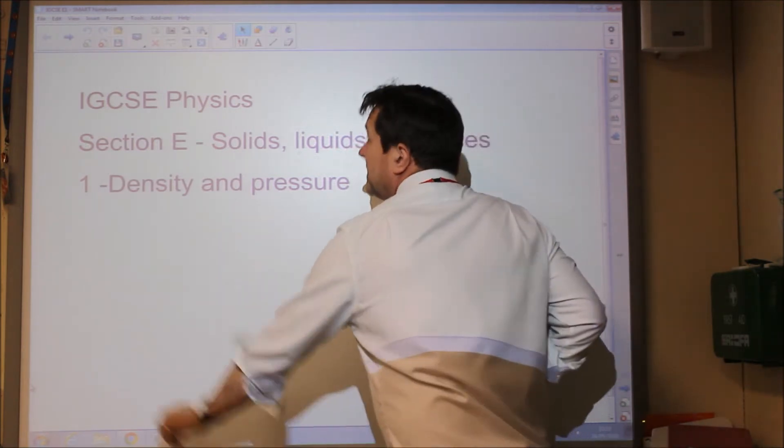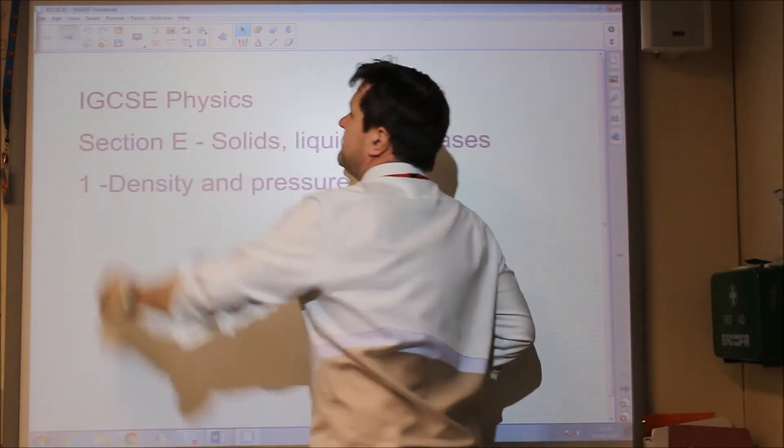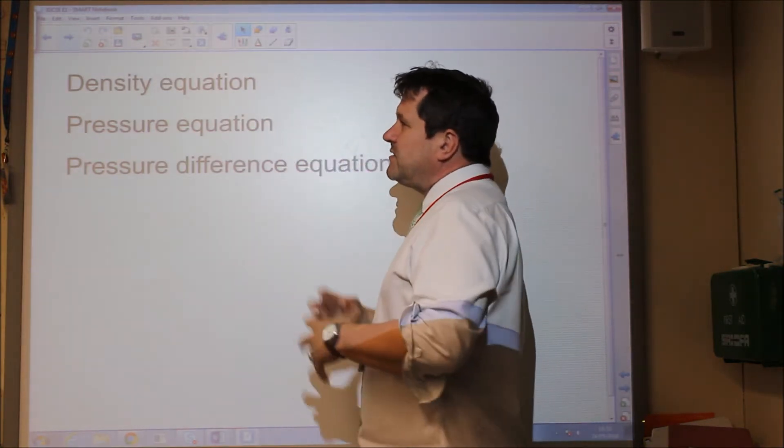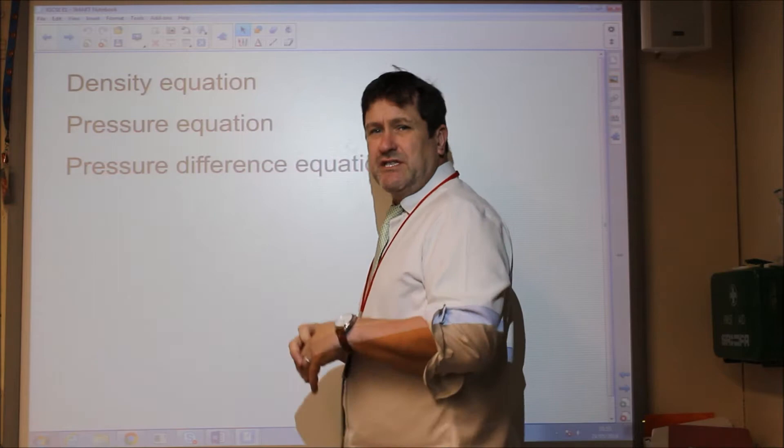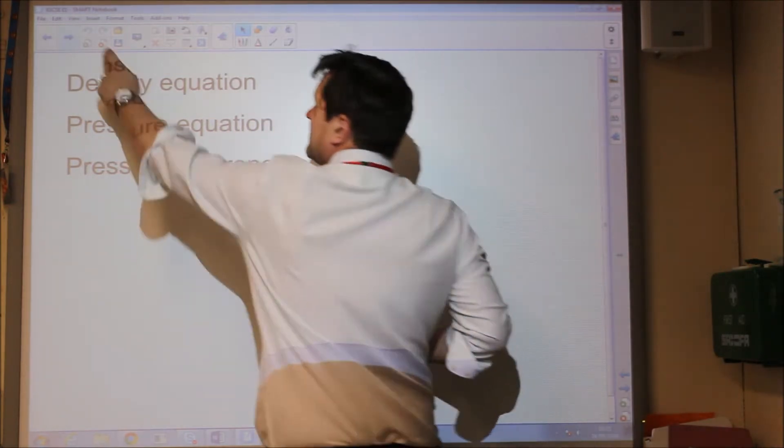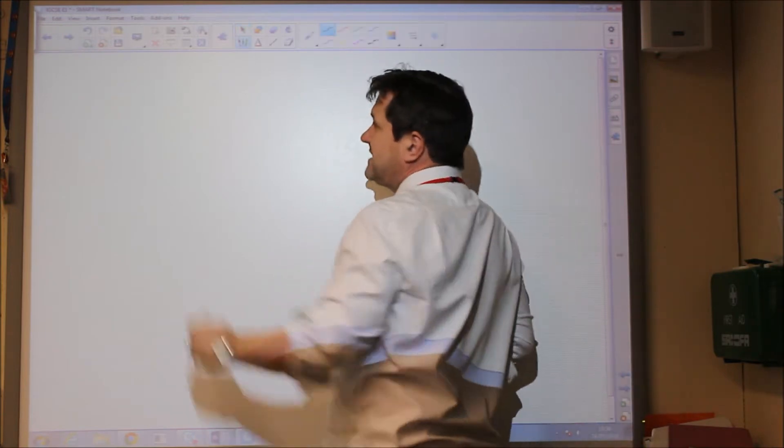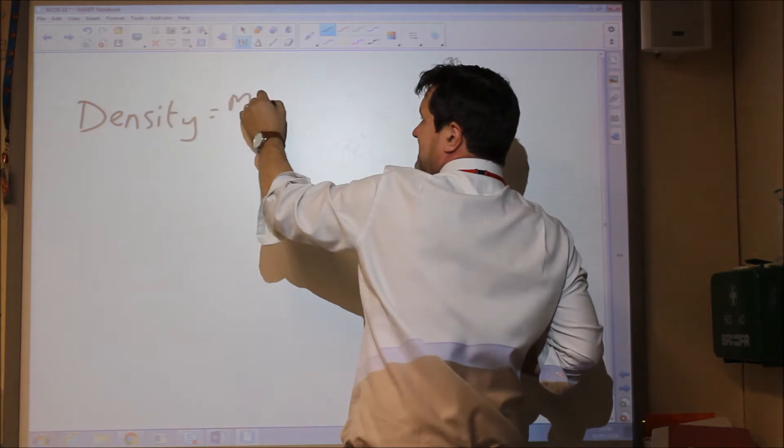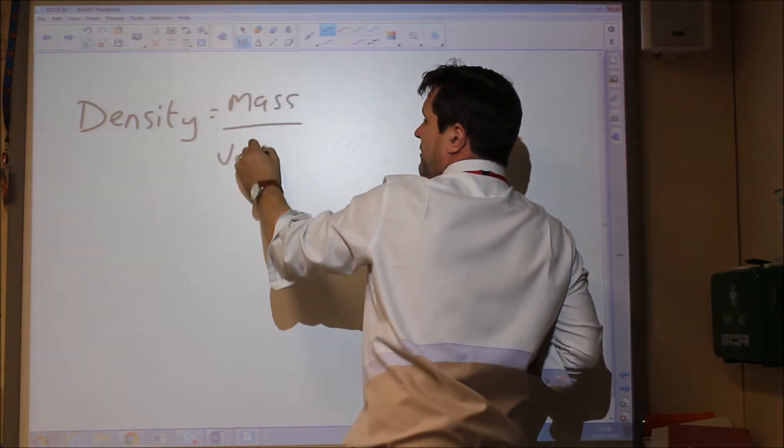Now if we look at density, the first thing we need to look at is a density equation and I want to look at density in terms of units to do with volume, which is why I'll split this into two sections. Now the equation for density: Density equals mass divided by volume.